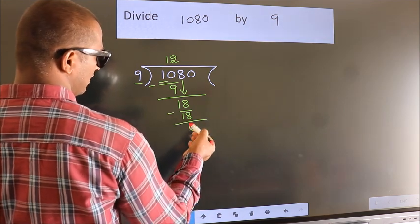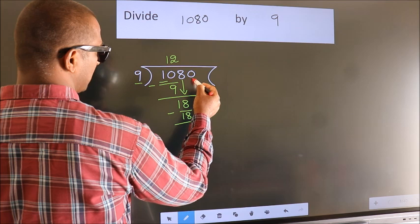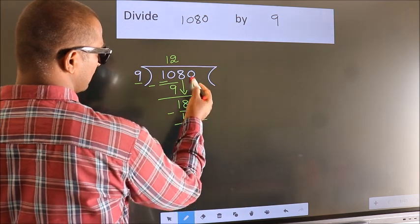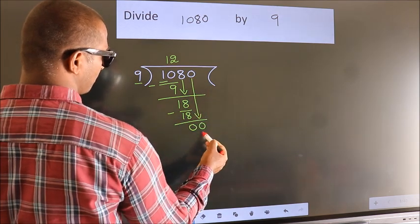We get 0. After this, bring down the beside number, so 0 down. So 0.